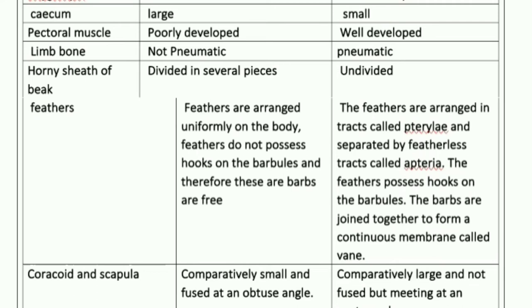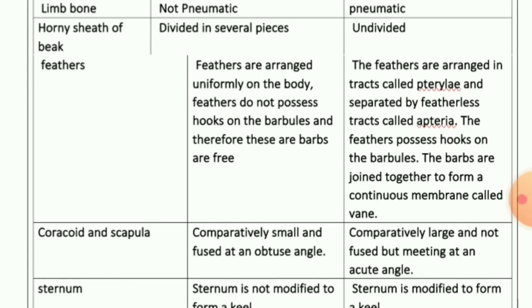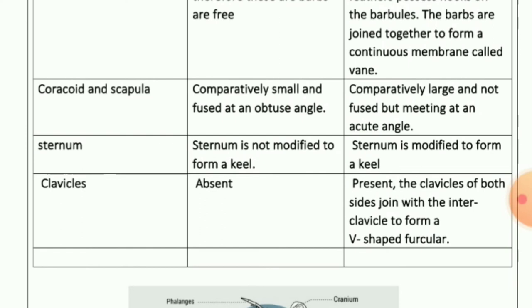For the horny sheath of the beak: if the beak is divided into several pieces, the bird is a Ratitae; if it is undivided, it is a Carinate. For feathers: in Ratitae, feathers are uniformly arranged on the body and do not possess hooks on the barbules.